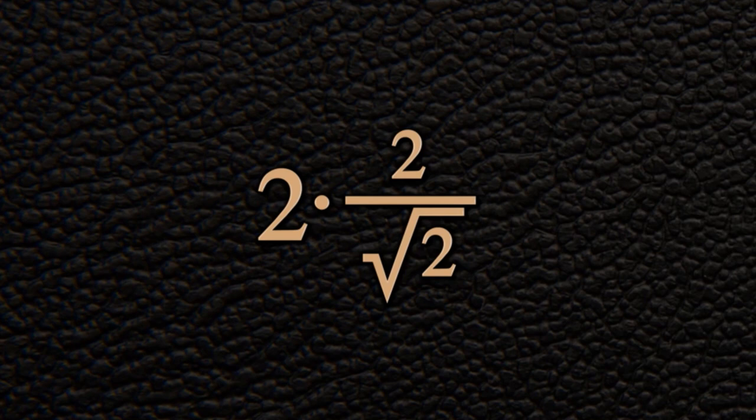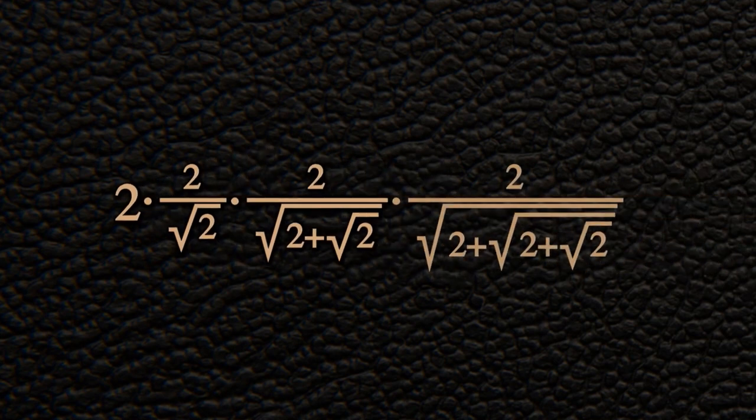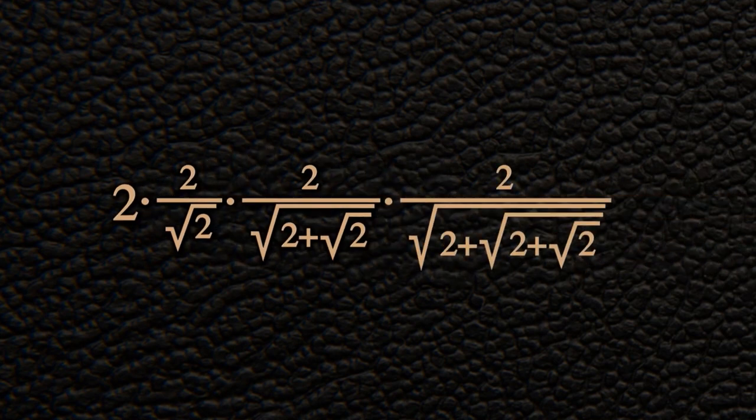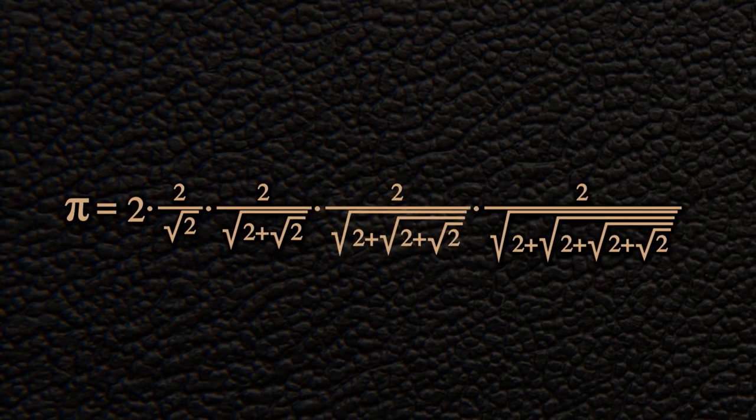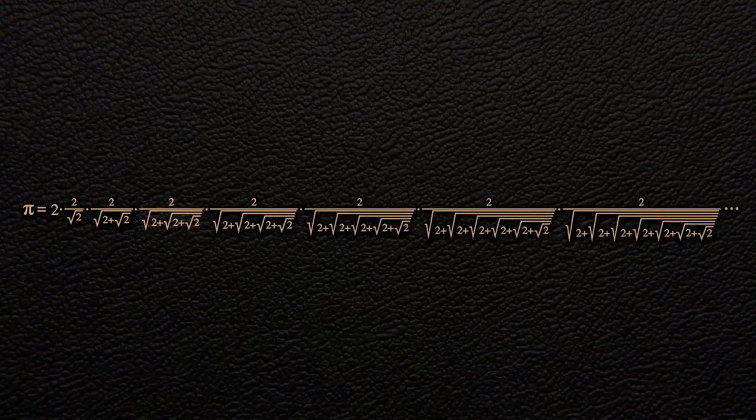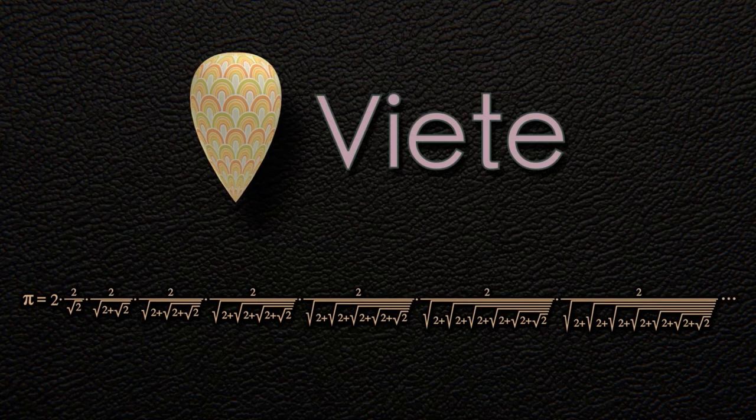Here's a fun one. Start with 2, multiply by 2 over the square root of 2. Then multiply that by 2 over the square root of 2 plus the square root of 2. Then multiply that by 2 over the square root of 2 plus the square root of 2 plus the square root of 2. With each step, we're just sneaking in another plus square root of 2 under the square root sign. This product gets closer and closer to pi. This is known as the Viète method.